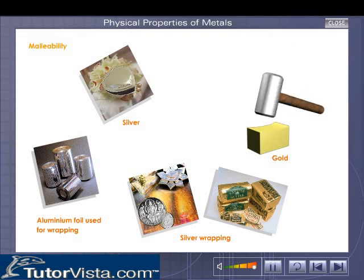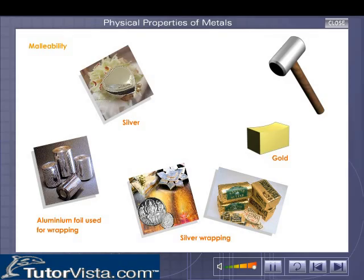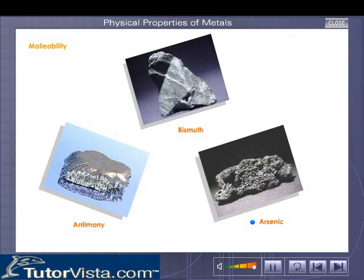Malleability: metals are malleable, meaning they can be converted into sheets or foils by hammering. Gold is the most malleable metal. Thin foils of silver are used for decorating sweets, and aluminium foil is used for wrapping eatables like chocolates. However, arsenic, antimony, and bismuth are brittle exceptions — they get powdered on hammering.